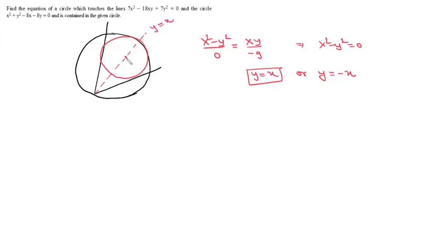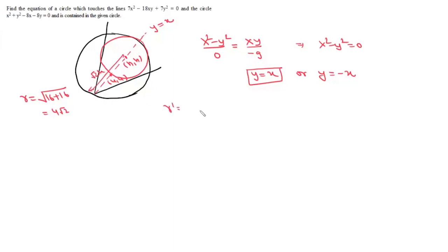Let the center of the circle be at point (h, h). The center of the given bigger circle is at (4, 4), and its radius is √(16 + 16) = 4√2. The radius of the smaller circle will be 8√2 - h√2, which equals (8 - h)√2. All we need to do is find the values of h and r.